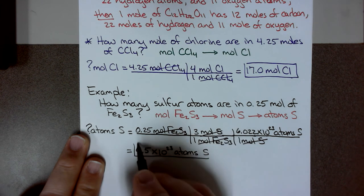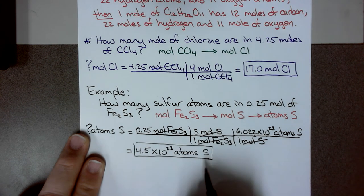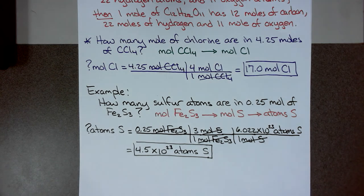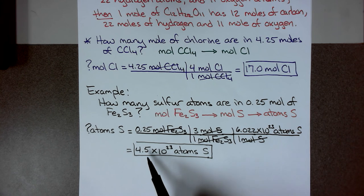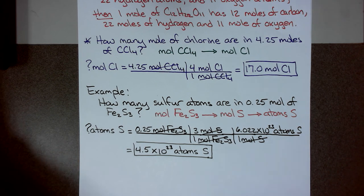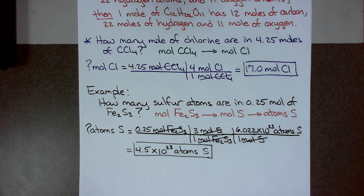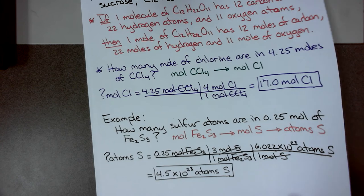I should have a big number because I'm looking at atoms. If you only got 4.5 atoms — not times 10 to the 23rd — how do you get half of an atom? That makes no sense, so make sure you are evaluating your answer. We still have two more types of mole conversions to talk about, so let's do mole to mass conversions.